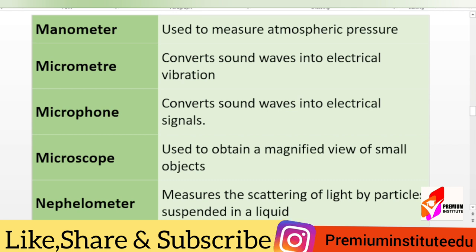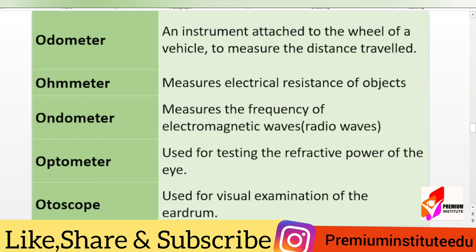Forty-fifth, nephelometer — measures the scattering of light by particles suspended in a liquid. Forty-sixth, odometer — an instrument attached to the wheel of a vehicle to measure the distance travelled. Forty-seventh, ohmmeter — measures electrical resistance of objects. Forty-eighth, ondometer — measures the frequency of electromagnetic waves, radio waves.